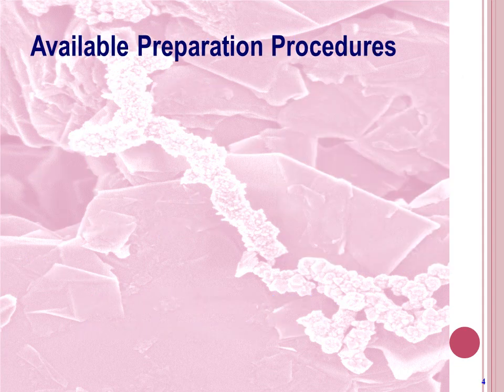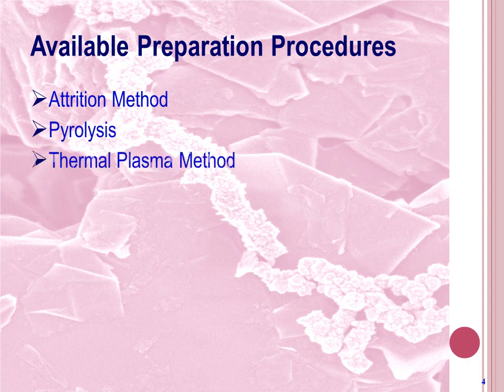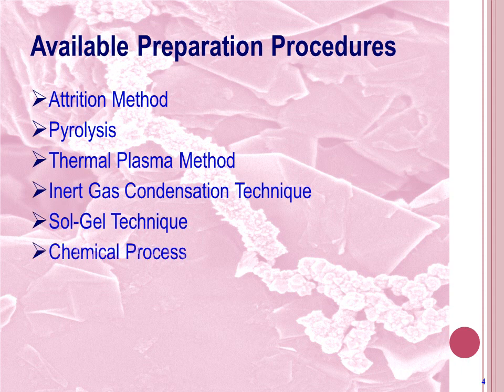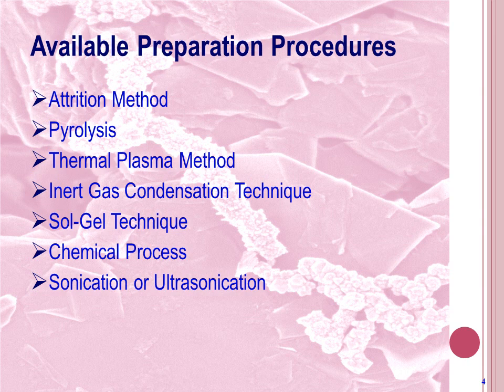After knowing the definition, let's see some procedures for preparing nanoparticles. The available manufacturing methods of nanoparticles are: attrition method, pyrolysis, thermal plasma method, inert gas condensation technique, sol-gel technique, chemical process, and sonication or ultrasonication. All these methods require very sophisticated control, as it is the engineering of very tiny material.